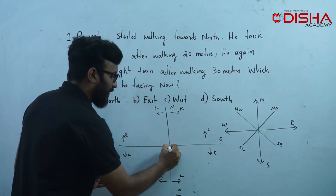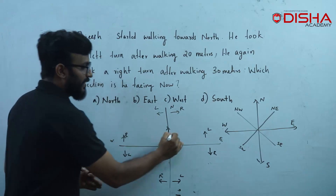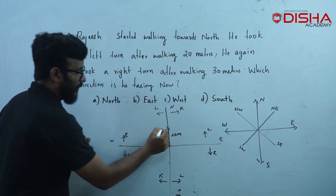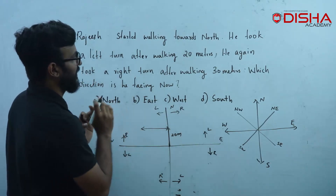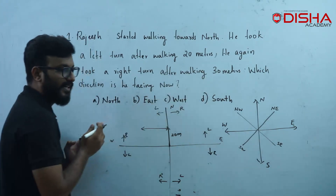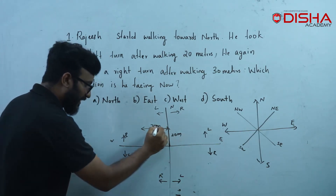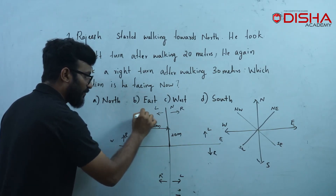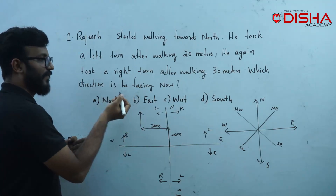Rajesh is going to the north. He traveled to the north, then he took a left turn. He took a right turn after walking 30 meters. He did a right turn. That's the right move — straight turn is not a right turn. You don't need the straight turn; this is the right direction he is facing.